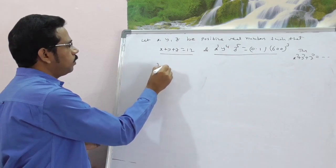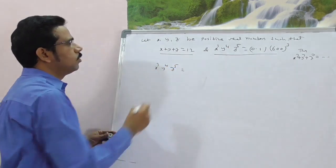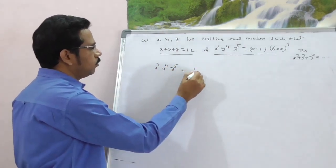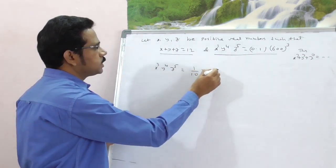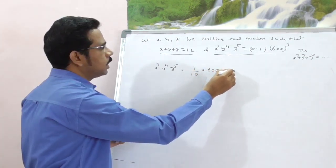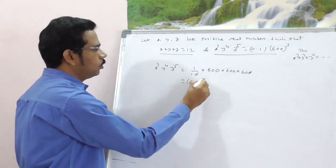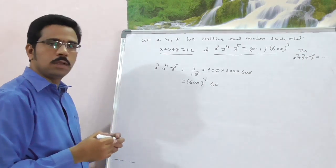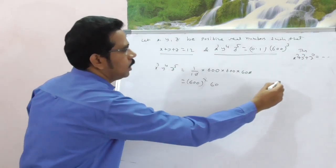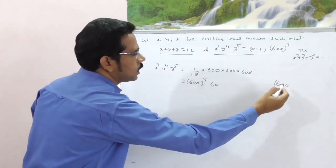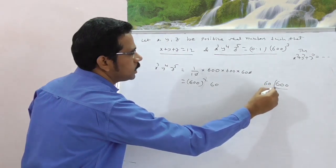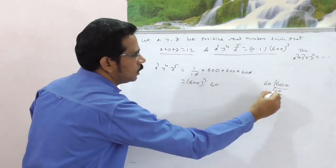Now I am taking x³y⁴z⁵ is equal to 0.1, that's 1 by 10. Now I am writing it as 600 of 600 of 600. This is nothing but 600 whole square of 60. Now observe, how can you divide this 600 into parts? Let it be 60 of 10 of 5.